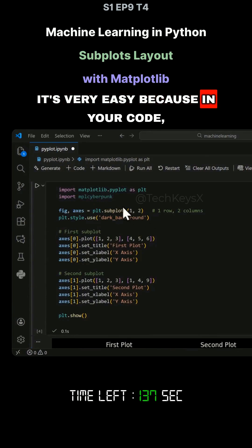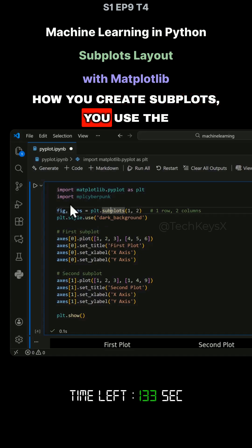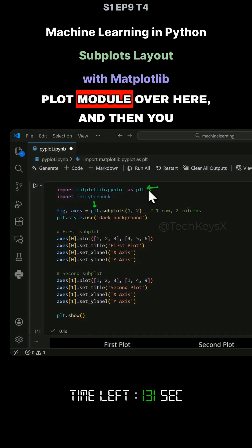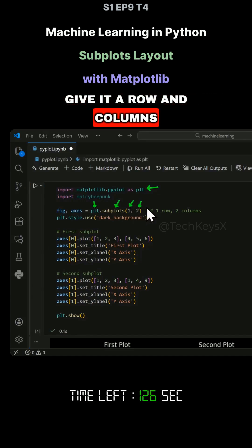It's very easy. In your code, when you create subplots, you use the plot module over here, and then you call the subplots function and you give it rows and columns.